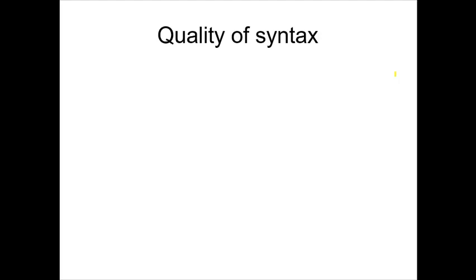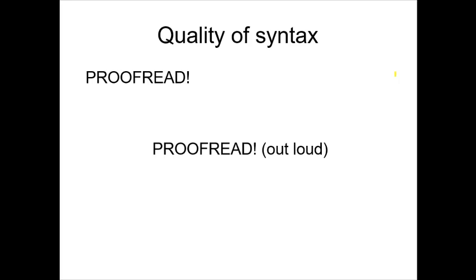To improve the quality of your syntax, the first thing you can do is proofread — proofread it multiple times, proofread it out loud, proofread it to somebody else if you need to, then proofread it again. If you proofread several times you will catch the typos, catch mistakes, and even catch that clumsy syntax we're going to talk about. Proofreading several times will help you catch many of the things that need improvement.